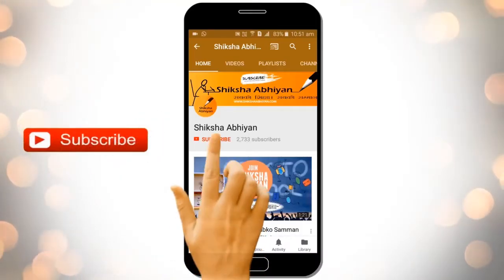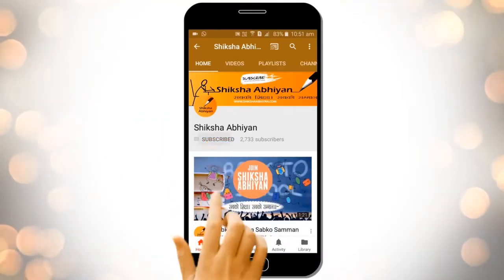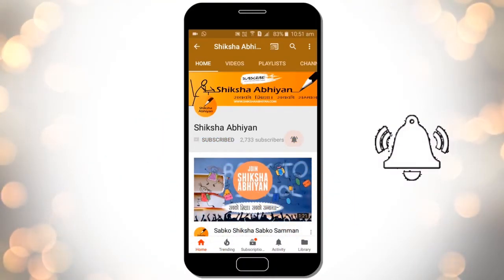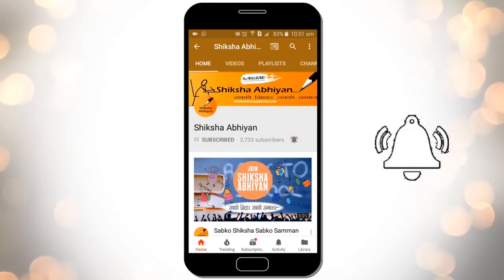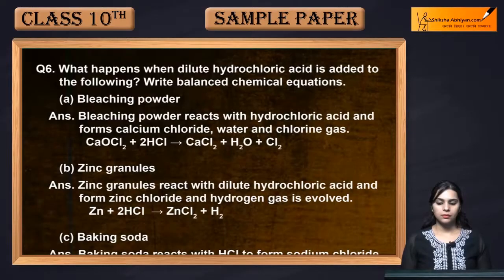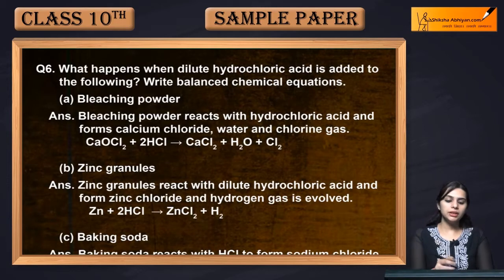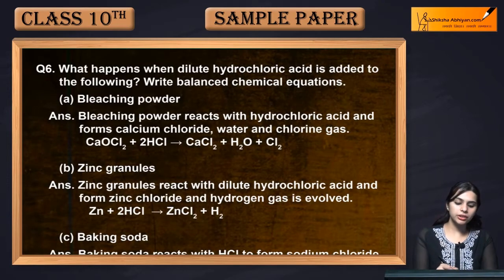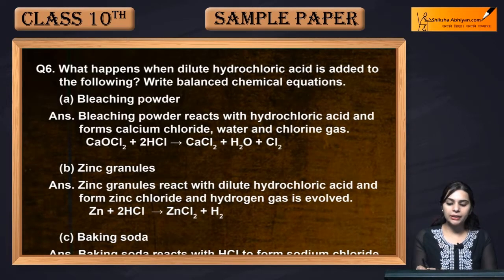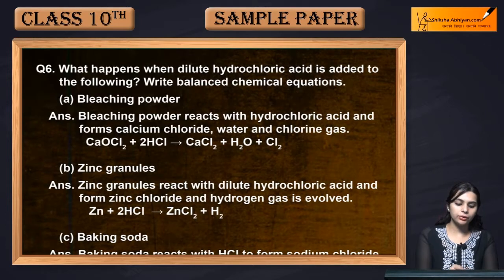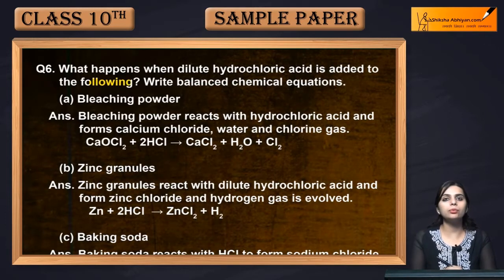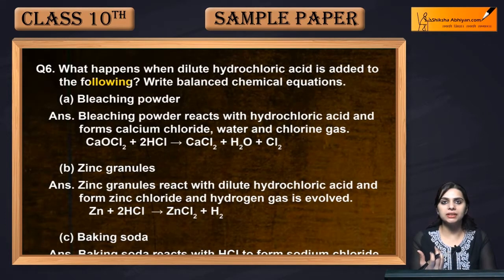Subscribe to our channel by clicking the subscribe button and the bell button. Hello students, our next question is question number six: what happens when dilute hydrochloric acid is added to the following? You have to tell some reactions in different substances if you add hydrochloric acid.